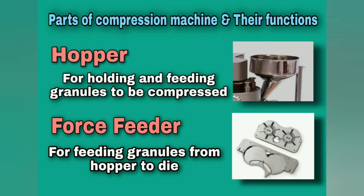Now I will discuss the parts of the compression machine with their functions. First, the hopper. The hopper is used for holding and feeding granules to be compressed. Then the force feeder. The force feeder is used for feeding granules from the hopper to the die.